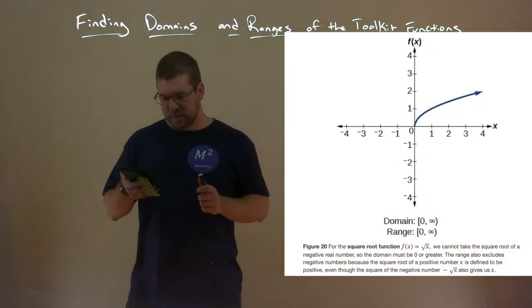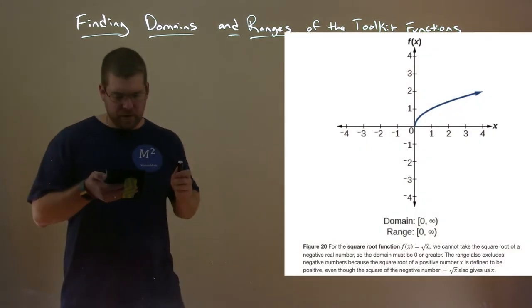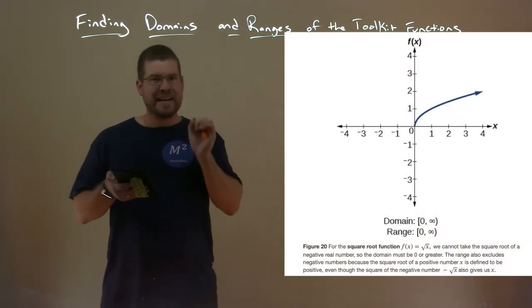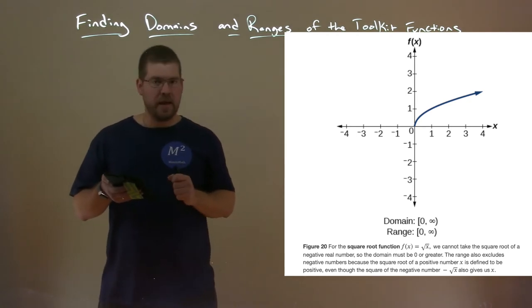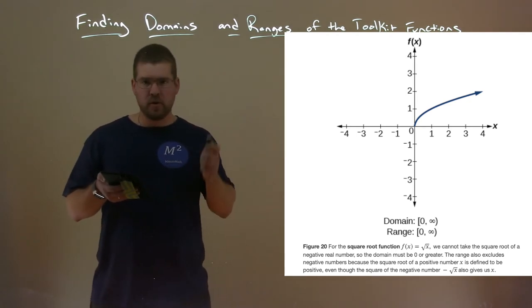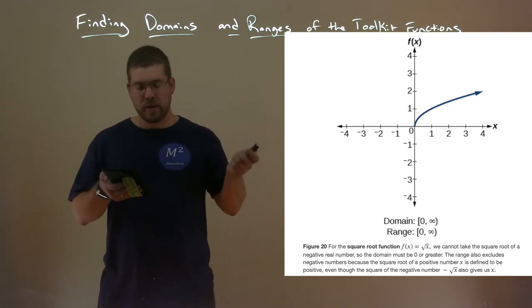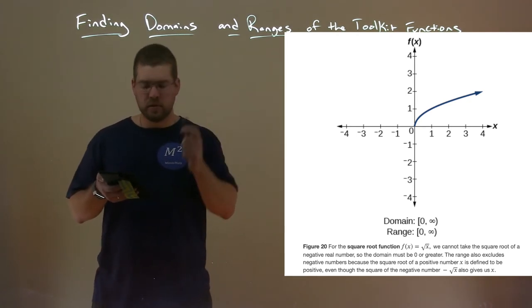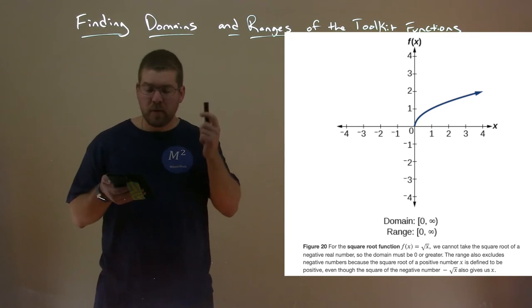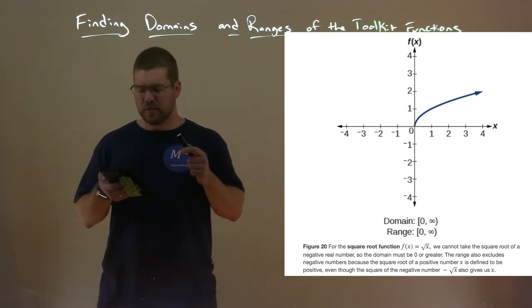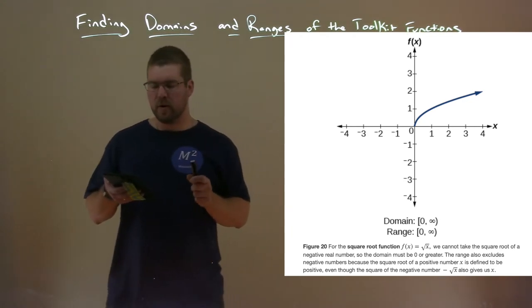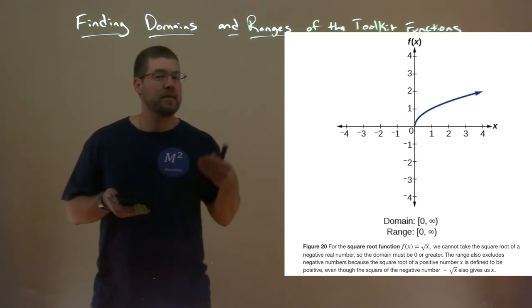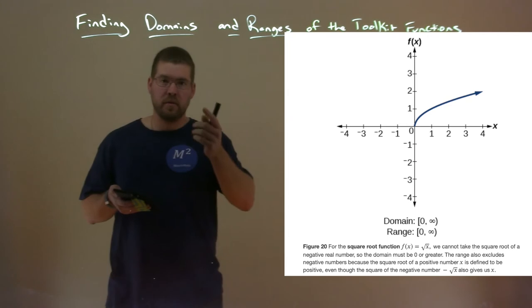The square root function: we can equal zero for both the domain and the range. The domain is from zero to positive infinity including zero, and the range is from zero to positive infinity including zero. We're allowed to take the square root of zero — that's okay.